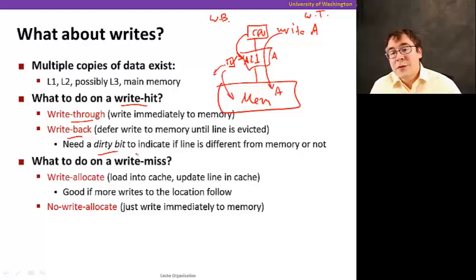Now this is what we do in a write hit. What to do in a write miss, you have two options. One is called write allocate. Should we load the data in the cache first and then do the write? And that's good because if you're going to write and then do more writes, that's a good thing because we allocated the data.